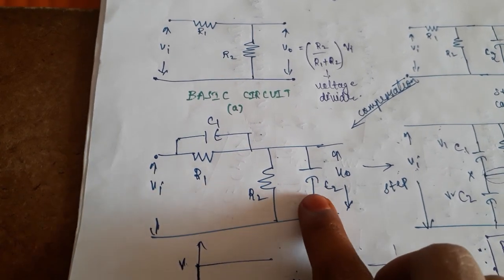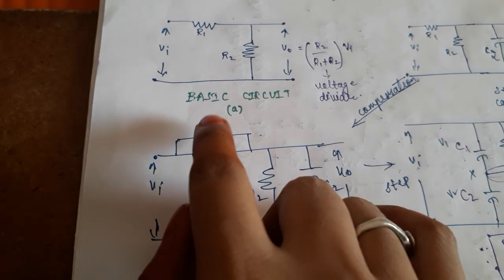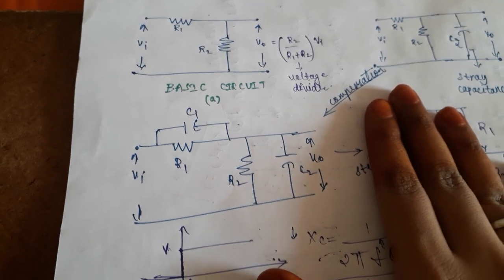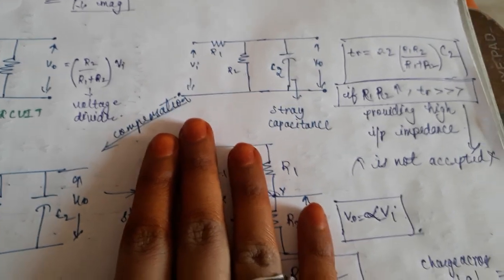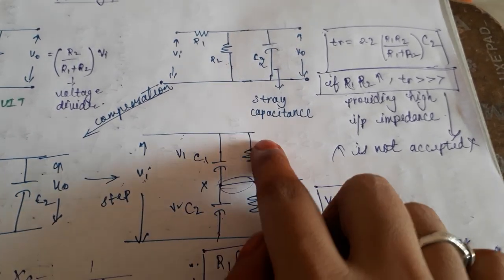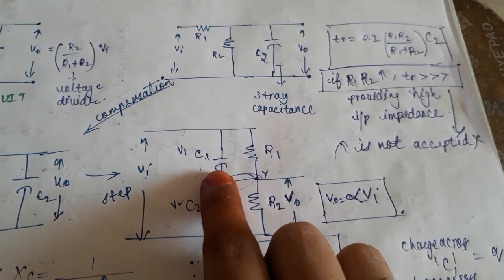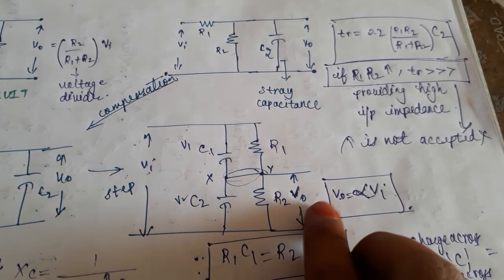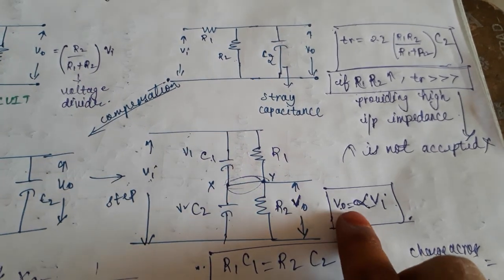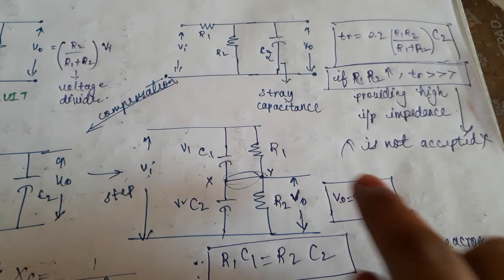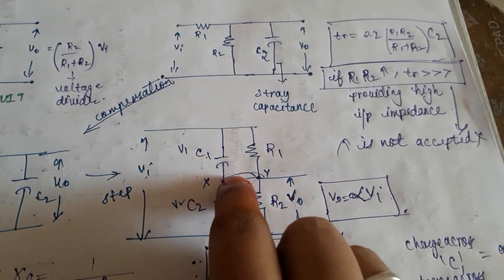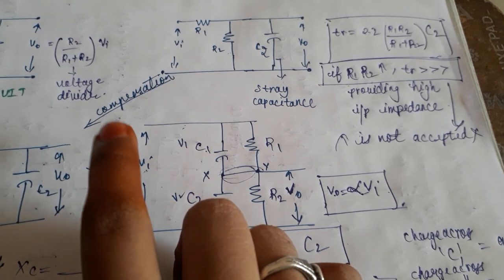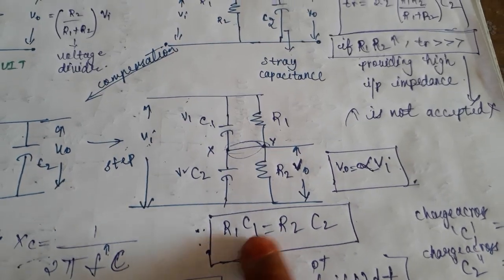Compensation means that while R2 is being shunted by stray capacitance, we now also shunt R1 with C1. This gives us a compensated circuit drawn as a bridge, where the four elements act as the four arms of the bridge. When the bridge is balanced, V0 = α·Vi, where α = R2 / (R1 + R2). When balanced, no current flows across path XY, so XY can be omitted. The balance condition is R1·C1 = R2·C2.